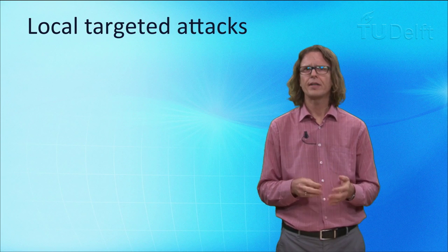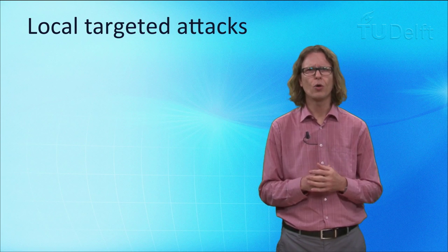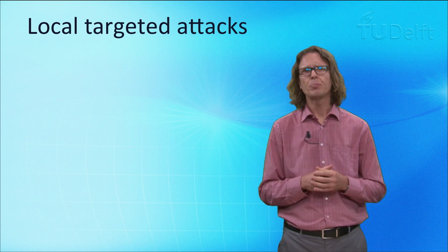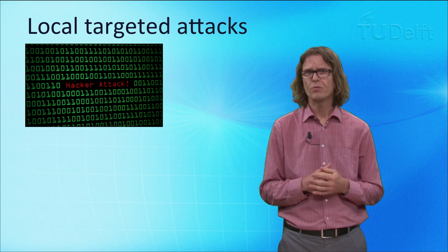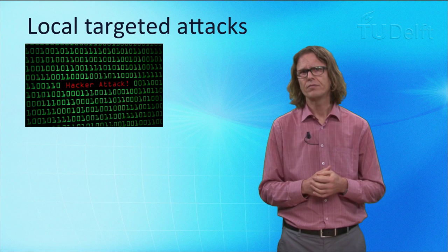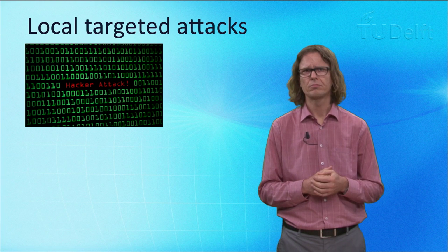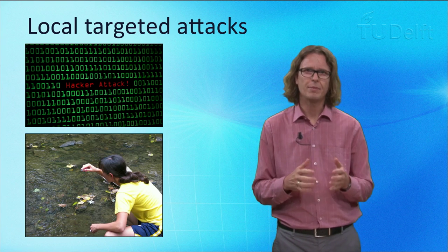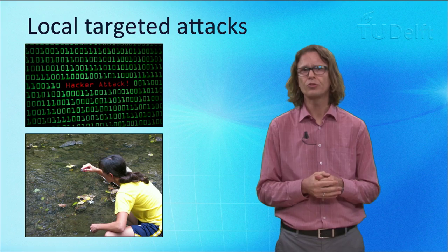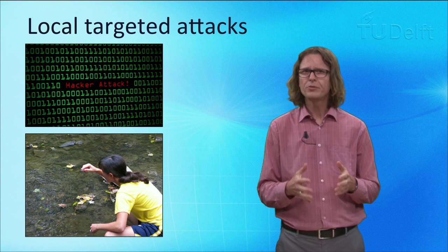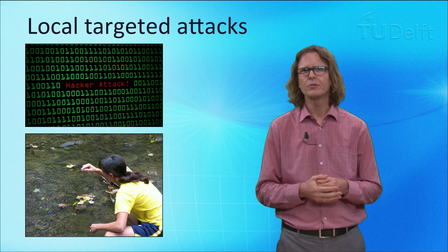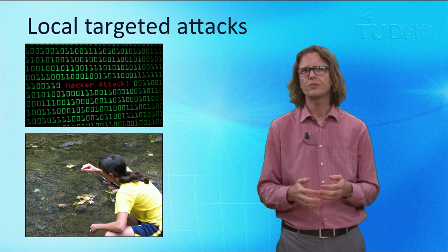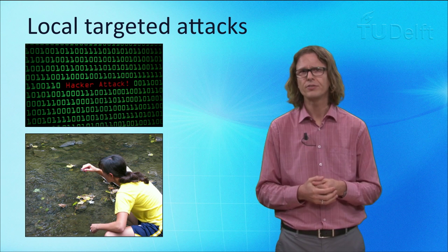Other corroborated incidents of targeted attacks are much more localized. For example, in 2008 a disgruntled employee of the city of San Francisco locked city officials out of its computer networks. In 2000, another disgruntled employee — this time of an Australian firm selling SCADA-controlled sewage equipment — abused this equipment to let 800,000 liters of raw sewage spill out into local parks, rivers, and the grounds of a Hyatt Regency hotel.